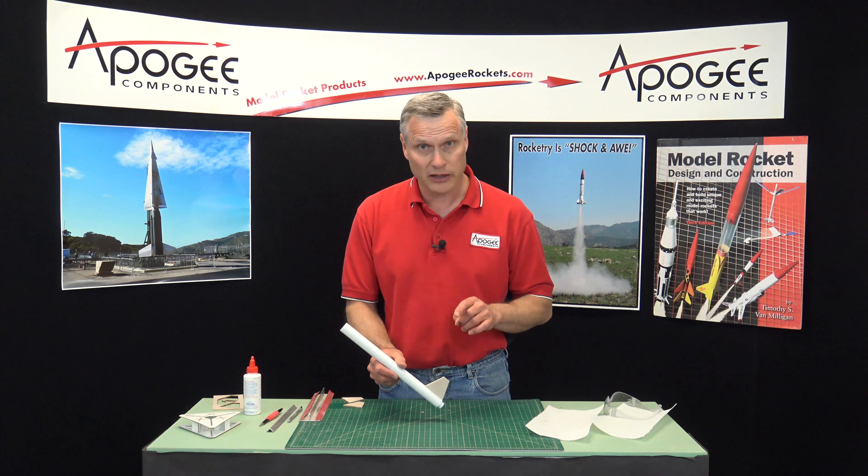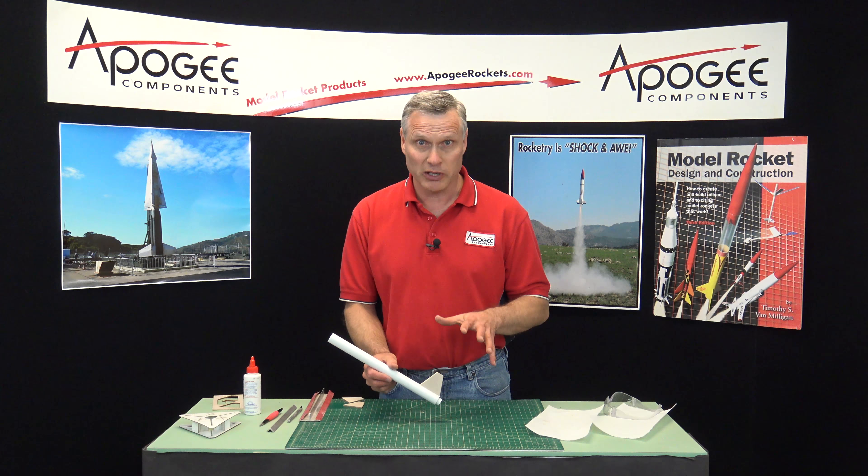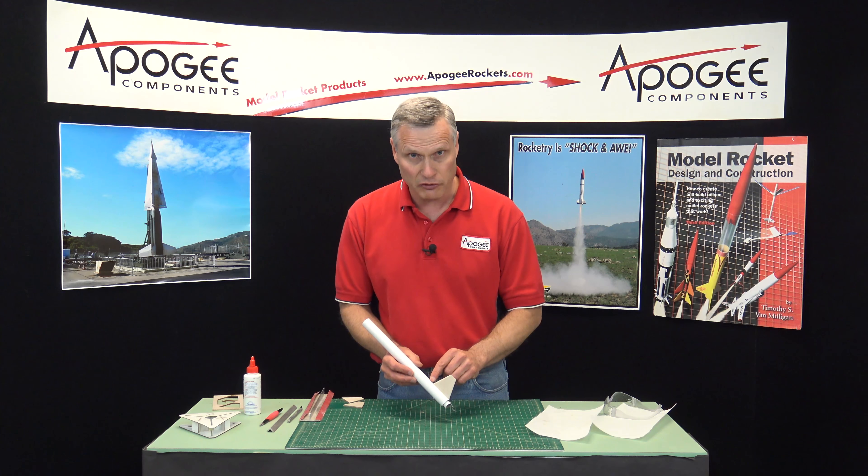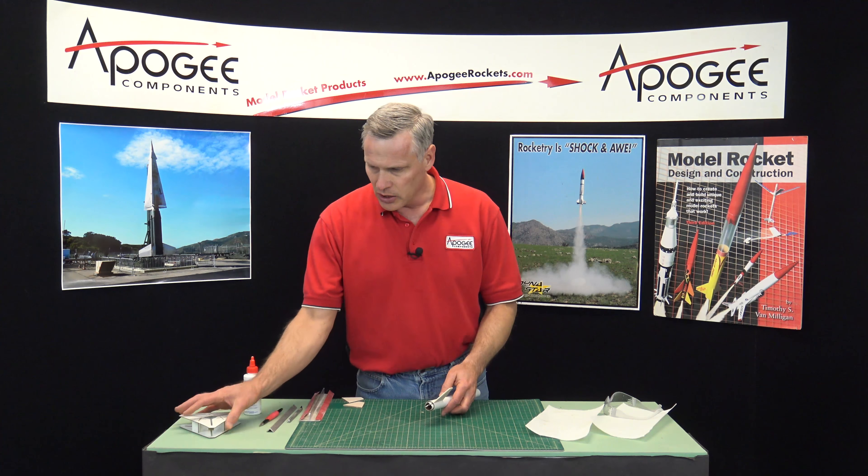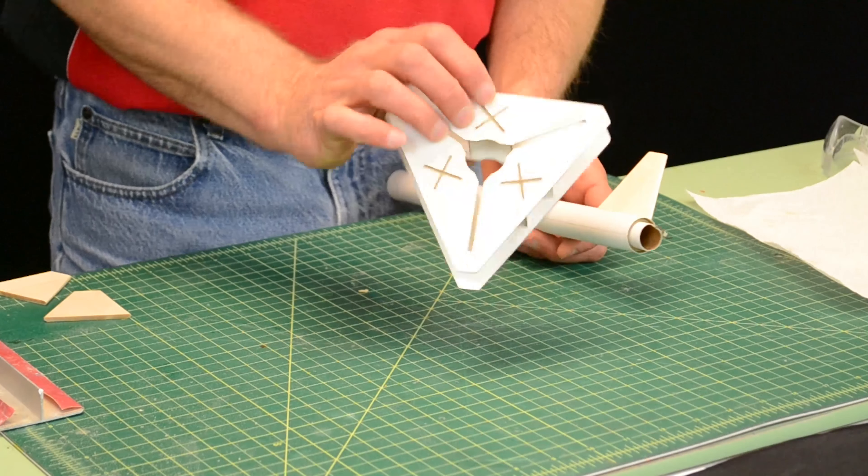The trick to putting fins on is to not use a lot of glue. Glue is not like ice cream. Ice cream is the more you have, the better it is. Well, glue is the opposite. You only want to use a little bit of glue to attach it to the rocket. Later, I'll come back and put a fin fillet on. And that's going to add more strength. And it's going to look like there's a lot of glue on there. But underneath the fin, we only want a little thin layer.